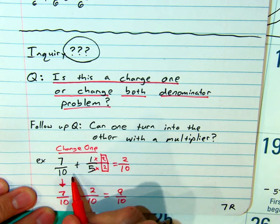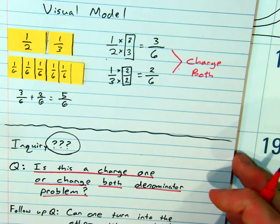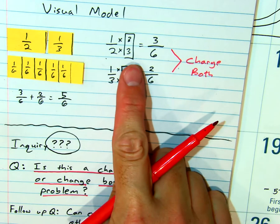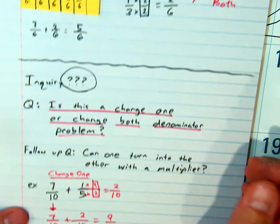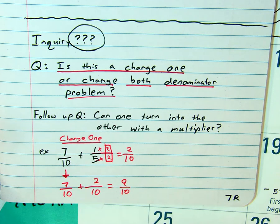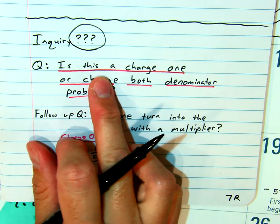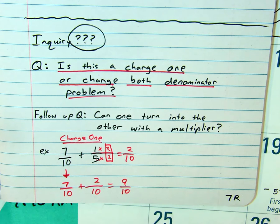In a change one, we're only doing half as much work. In a change two, or change both, we've got to get different multipliers. So this is how I recommend going about it. Let's start with this inquiry. Read it with me. Is this a change one or change both denominator problem?